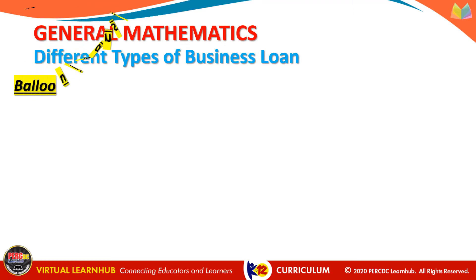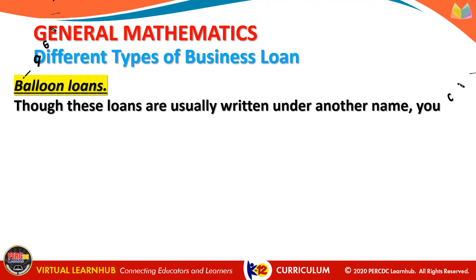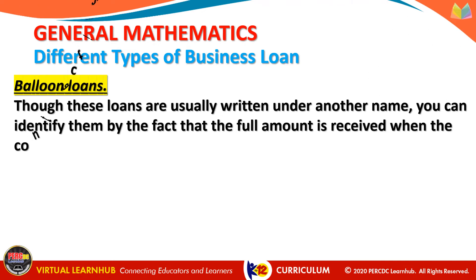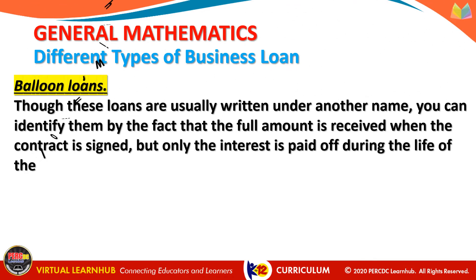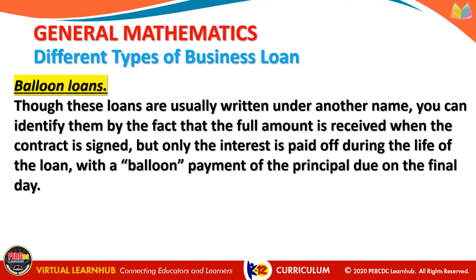Another type of business loan is balloon loans. A balloon loan is a loan that you pay off with a large single final payment. Instead of a fixed monthly payment that gradually eliminates your debt, you typically make relatively small monthly payments, but those payments are not sufficient to pay off the loan before it comes due. As a result, you need to make a final balloon payment to pay off the remaining loan balance, and that payment may be significant. Though these loans are usually written under another name, you can identify them by the fact that the full amount is received when the contract is signed but only the interest is paid off during the life of the loan.